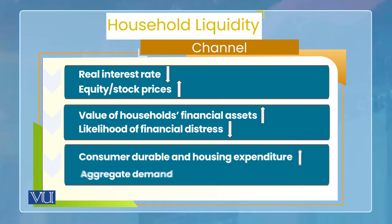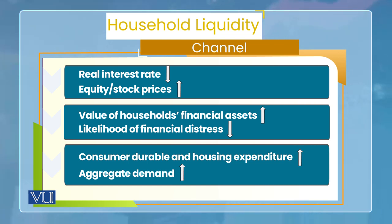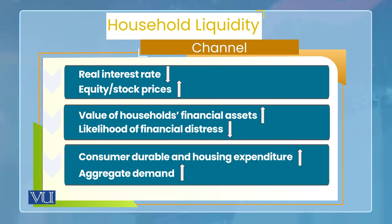اس کا channel یہ بنتا ہے: real interest rate کم ہو — جو expansionary monetary policy کی وجہ سے ہوگا — تو equity اور stock کی prices بڑھ جاتی ہیں، جو firm کی financial assets ہیں۔ جب ان کی price بڑھ جاتی ہے تو جن households نے equity یا stock hold کی ہوئی ہے، ان کے financially distressed ہونے کا likelihood کم ہو جاتا ہے۔ اس کا مطلب ہے consumer durables کی demand increase ہو جاتی ہے کیونکہ وہ sure ہیں کہ financial distress میں نہیں جائیں گے — یہ اس لیے ہوا کہ monetary policy action سے ان کے financial assets (equity/stock) کی prices بڑھ گئیں۔